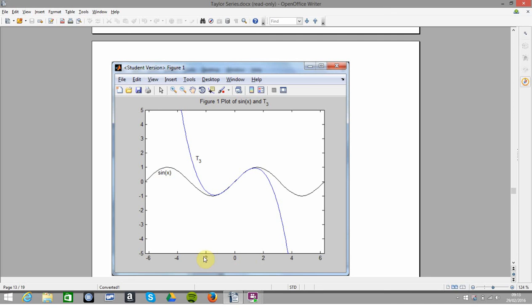But say if we look at even around minus 2 or even plus 2 for that matter, the error is getting quite big. And the further we go away from 0, the bigger the error.